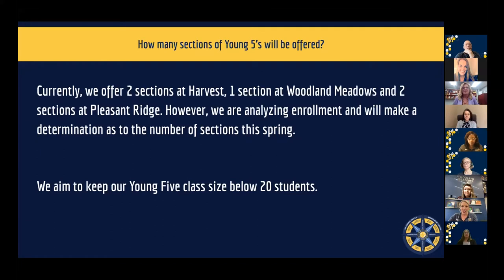We currently offer two sections of Young Fives at Harvest, one section at Woodland Meadows, and two sections at Pleasant Ridge. That said, we have not determined the exact sections yet, as that is based on enrollment numbers. Those sections could flex between the three buildings based on what we see in registration.